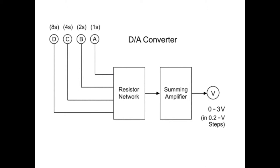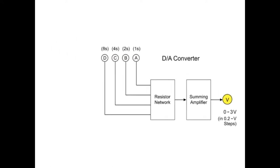Consider the possible binary inputs at D, C, B, and A, and the corresponding voltage output based on the following truth table.